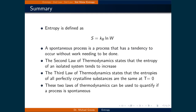Here is a summary of this lecture. Entropy is defined as Boltzmann's constant times the natural logarithm of the number of microstates in a given macrostate. A spontaneous process tends to occur without work being done, quantified by entropy since systems evolve toward macrostates with more microstates. The second law of thermodynamics states that the entropy of an isolated system tends to increase. The third law states that the entropies of all perfectly crystalline substances are the same at T = 0 Kelvin. Together, these laws let us determine spontaneity: if the total entropy change is positive, the process is spontaneous.